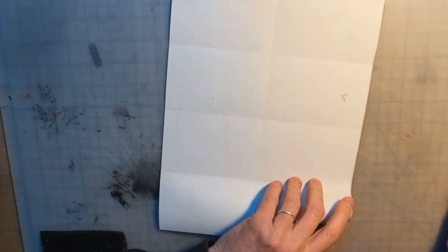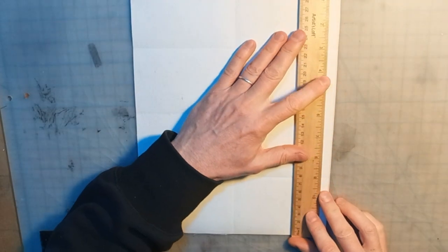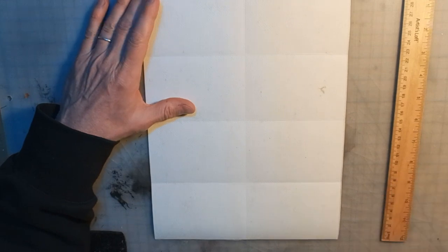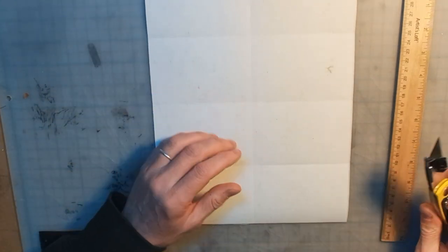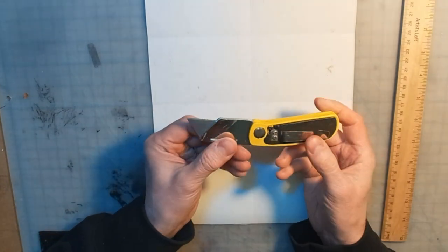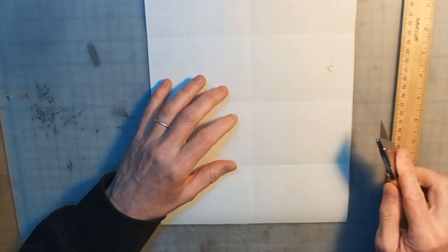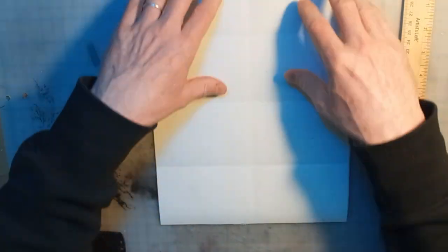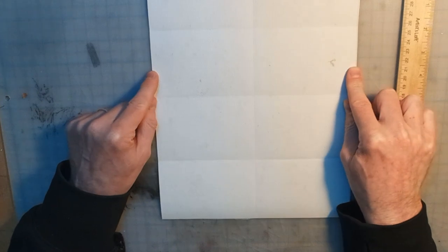So what's next is the side flaps. So this could be a little bit tricky. So we need something to cut with. A craft knife, an exacto knife, something like that, a sharp edge. So we're going to, of these four sections, only one of them is going to need the tabs on it.